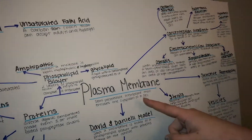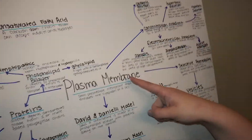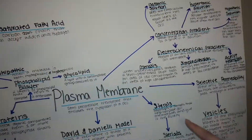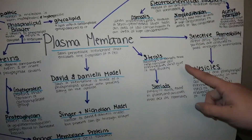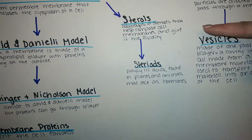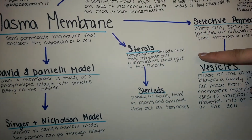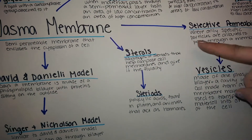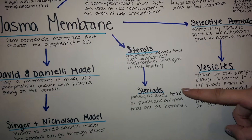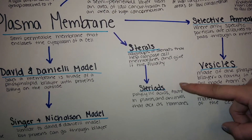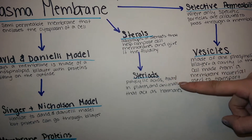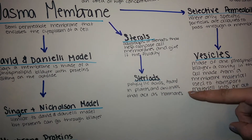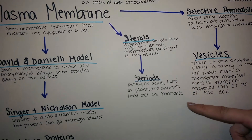Back from the plasma membrane, it is also made up of sterols, which are subgroups of steroids that help compose cell membranes and give them fluidity. Sterols are a type of steroid, and steroids are polycyclic compounds found in plants and animals that act as hormones.